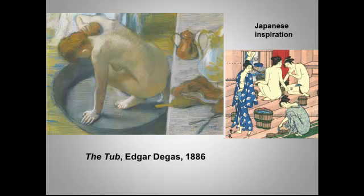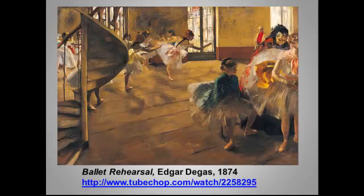Both Mary Cassatt and Edgar Degas use line more sharply than, for example, Monet, who admittedly was also influenced by the Japanese. This greater emphasis on line is thought to be drawn in part from those Japanese woodblock prints. Of course, Degas is most famous for his paintings and sculptures of dancers. Notice that while his paintings rely more heavily on line, he still captures dappled light with loose brush strokes.